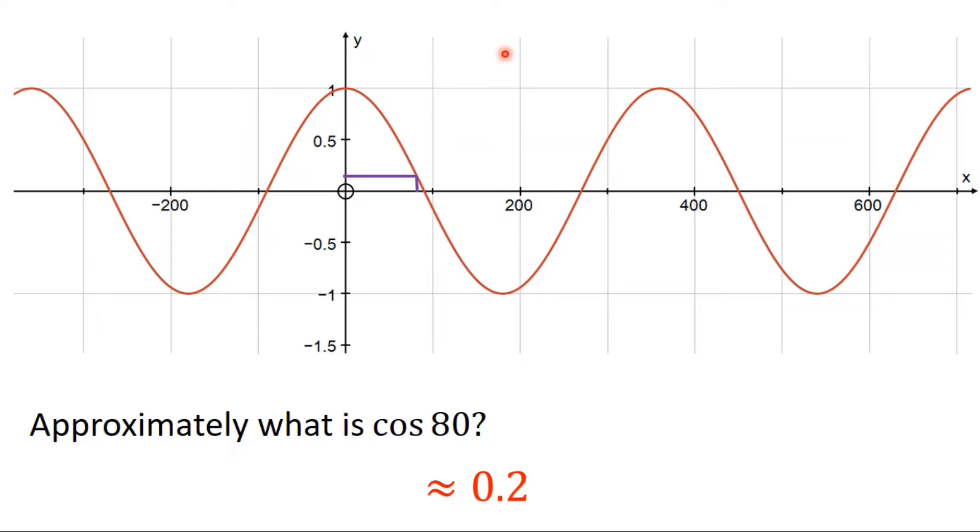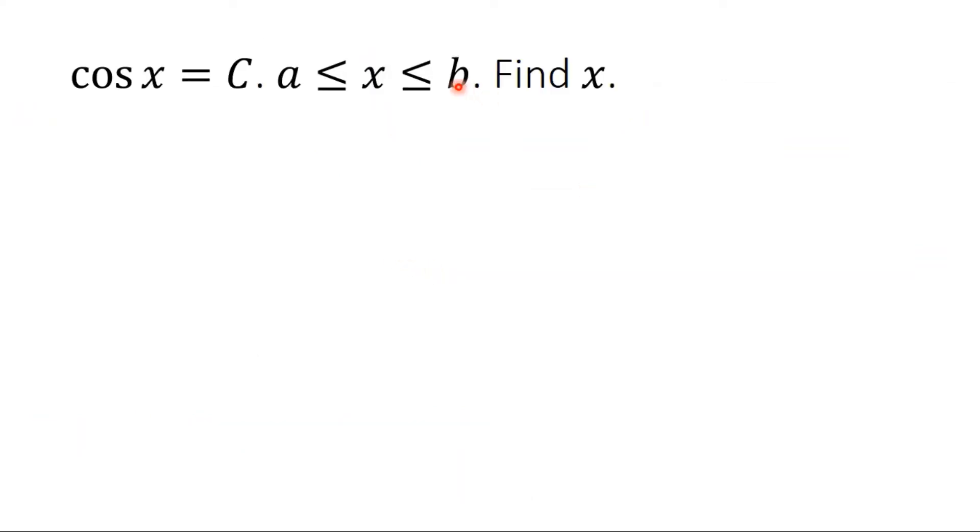Now that's great if we're going in that direction, if we're trying to find a y value given an x-value, but of course sometimes we want to go the other way. We looked at sine graphs questions a little bit like this, but with sine instead of cos and we came up with a system. Now that system is going to work exactly as well with questions involving cosine.